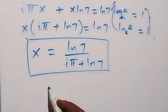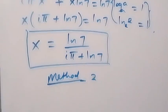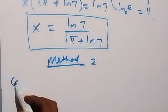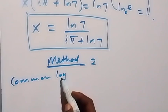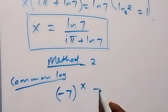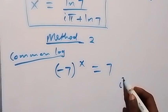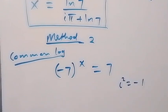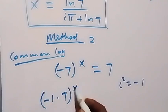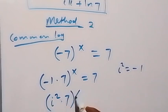Now using the second method — method 2 — we use the common log. What is given is minus 7 raised to power x equals 7. Recall that i² equals minus 1. So we separate this as minus 1 times 7 raised to power x equals 7. And since minus 1 equals i², we have i² times 7, raised to power x, equals 7.